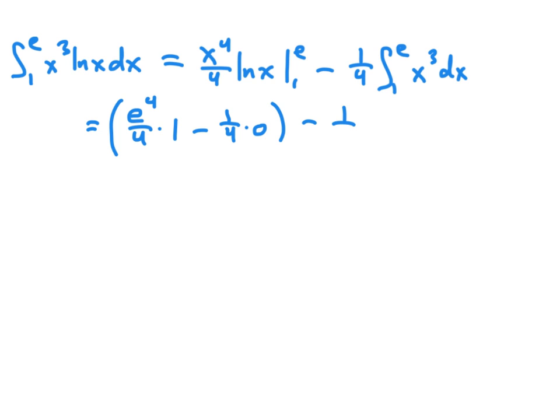And here we're going to have 1 4th times x to the 4th over 4 evaluated from 1 to e. Our first term here simplifies simply to e to the 4th over 4. And then we're going to subtract negative 1 4th times the quantity of the integral here, which will be e to the 4th over 4, minus 1 to the 4th over 4. So e to the 4th over 4, minus 1 4th.